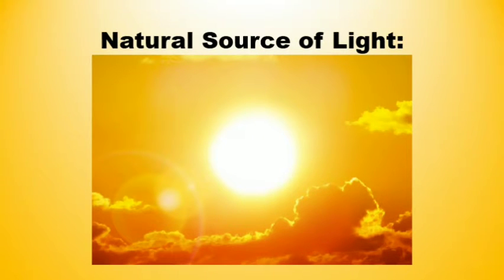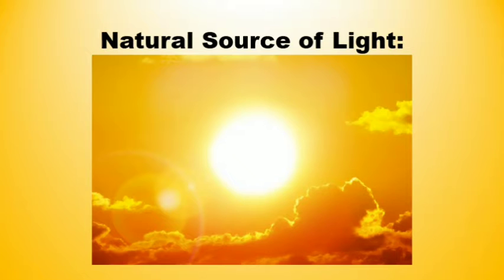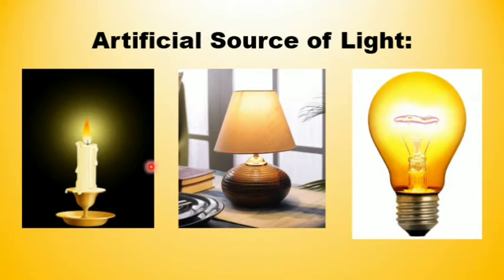Students, the sun is the natural source of light. Here, we use the word 'source.' Any object that emits light is called a source of light. Koi bhi object jisse light nikalti ho, usko source kehte hain — usko light ki source kehte hain, aur natural source kehte hain, sun. Candle, lamp, and electric bulb are made by humans and are called artificial sources of light.